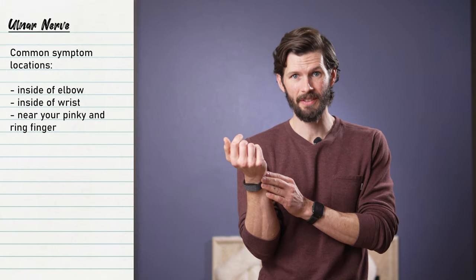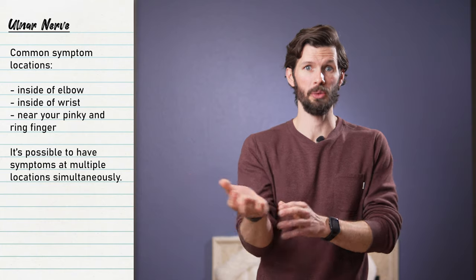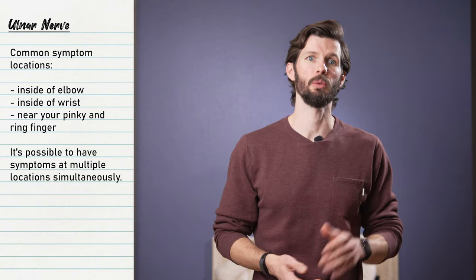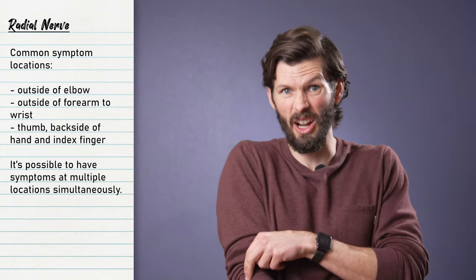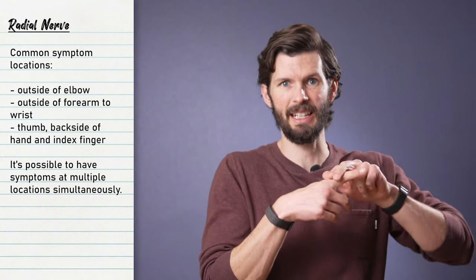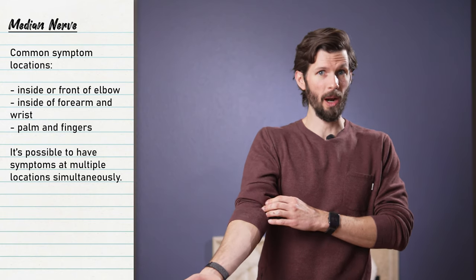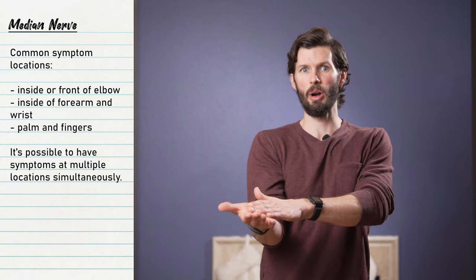Ulnar nerve irritation may present with isolated symptoms by the inside of your elbow, on the inside of your wrist, or to your fourth and fifth digits — the ring finger and pinky. But it's also possible to have symptoms at all three locations simultaneously. The radial nerve may cause symptoms on the outside of your elbow, traveling down the outside of your forearm to your wrist and into your thumb and possibly the back of your hand and index finger. The median nerve may present with symptoms on the inside or front part of your elbow and forearm, traveling down into the palms and fingers. The general path described is accurate for most cases.